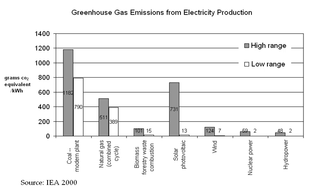Projections of future greenhouse gas emissions are highly uncertain. In the absence of policies to mitigate climate change, GHG emissions could rise significantly over the 21st century. Numerous assessments have considered how atmospheric GHG concentrations could be stabilized. The lower the desired stabilization level, the sooner global GHG emissions must peak and decline. GHG concentrations are unlikely to stabilize this century without major policy changes.